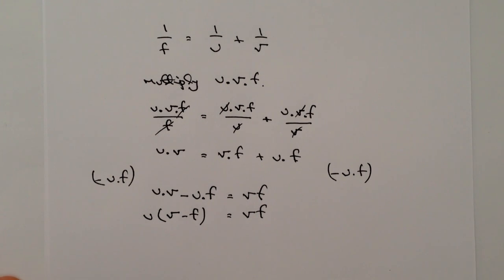And then I'm going to divide through by v minus f, so u equals vf divided by (v minus f).